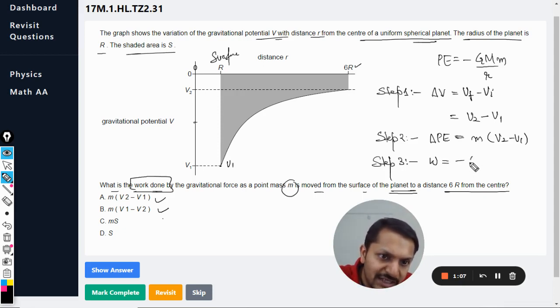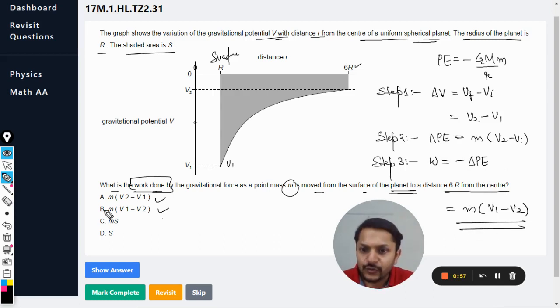So the work done is always equal to the negative of the change in potential energy, which means it will be M into V1 minus V2. So this is our answer and so the answer should be B. Let us verify the answer from the mark scheme.